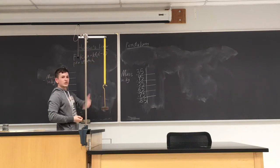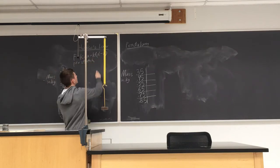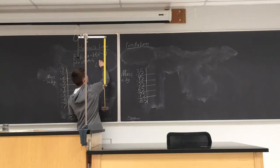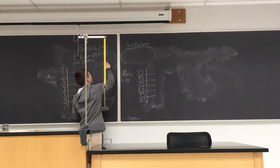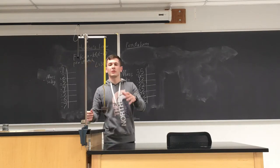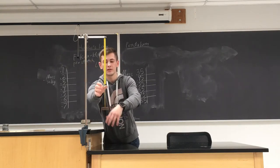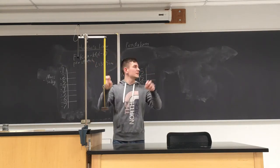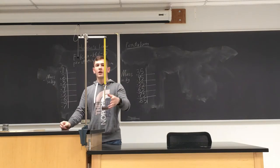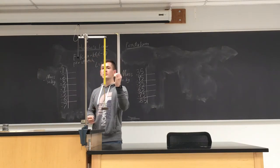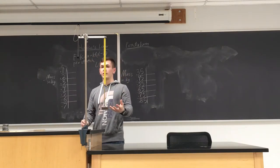We pre-stretch the spring and this equilibrium length L is going to be 30.5 centimeters. When we pre-stretch the spring we're considering this as zero mass — even though there is actually mass there, we're going to say that zero kilograms are stretching the spring right now.